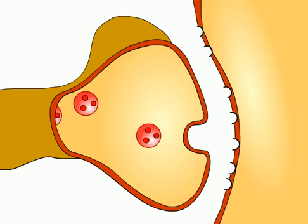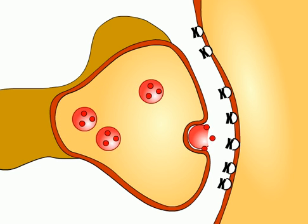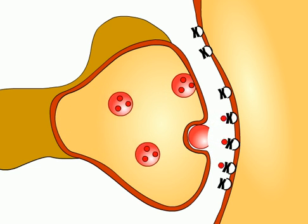Likewise, if synaptic transmission is interrupted, brain cells and other nerve cells cannot communicate.